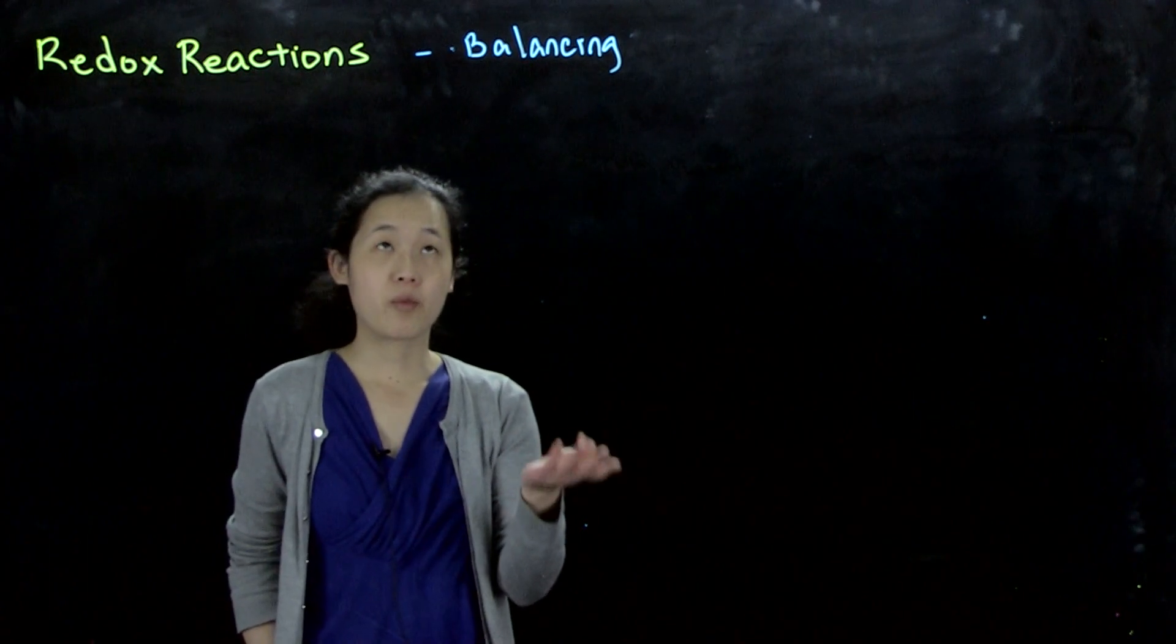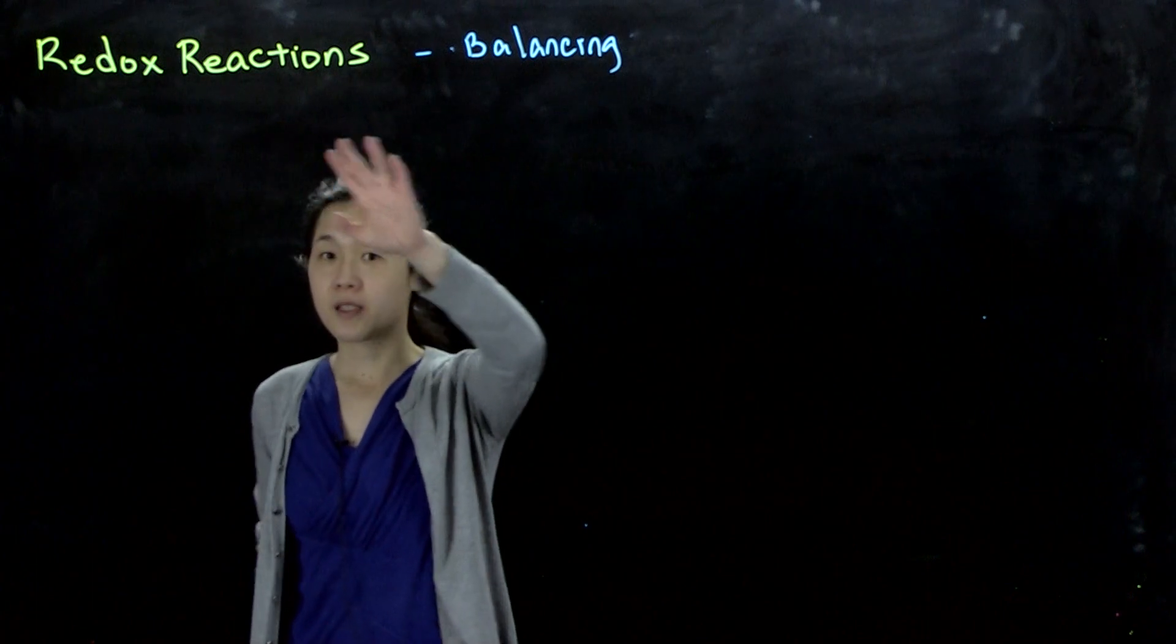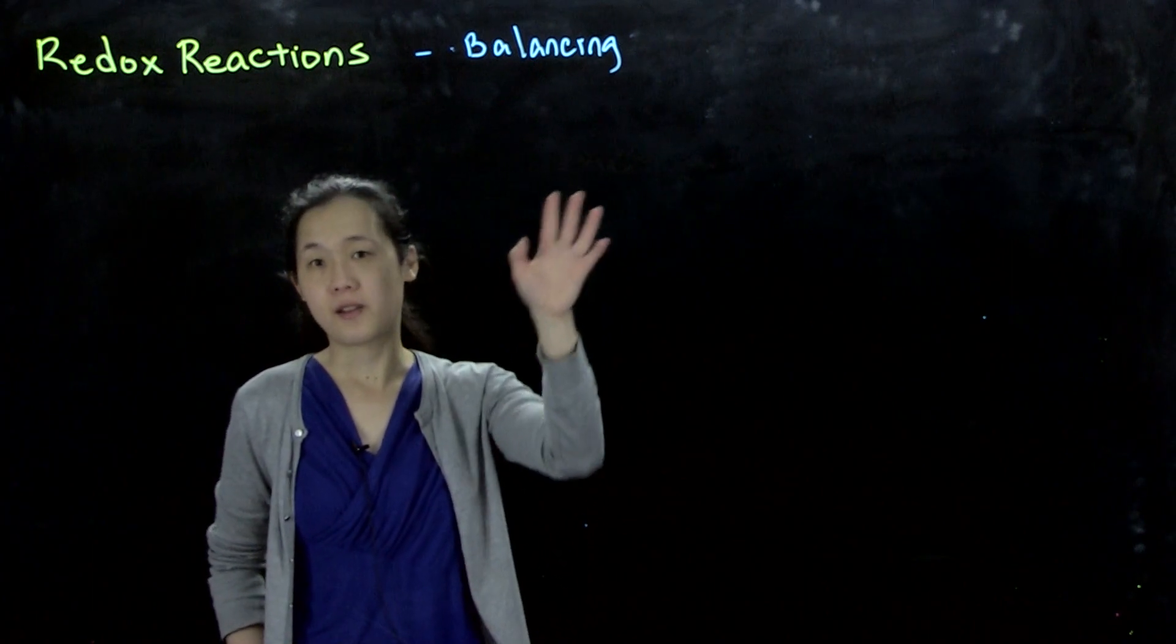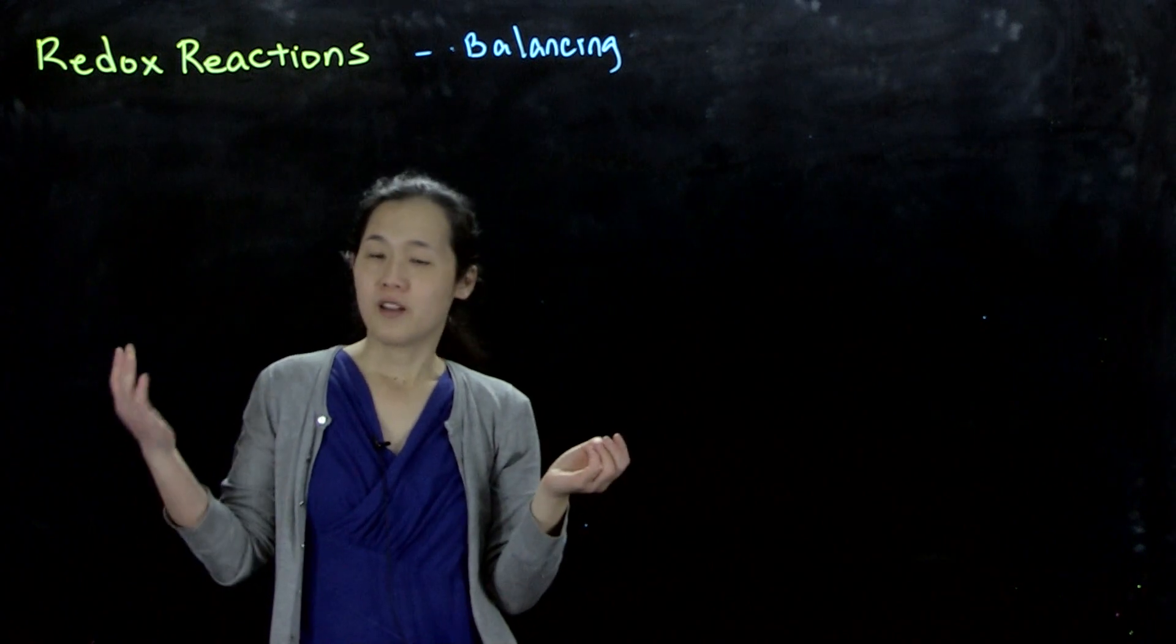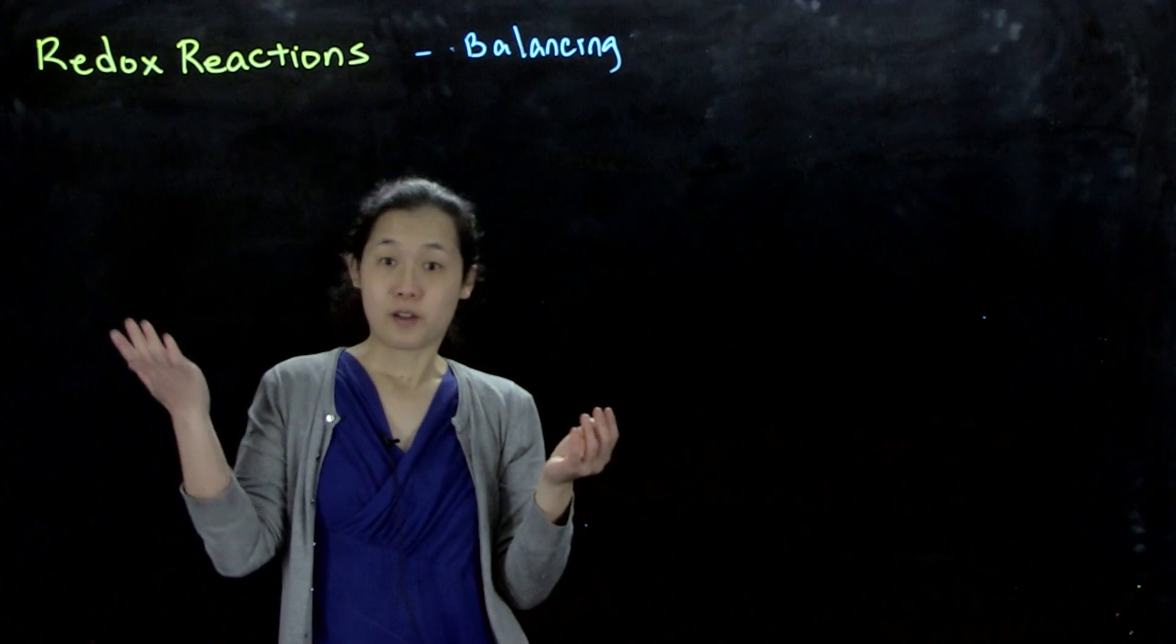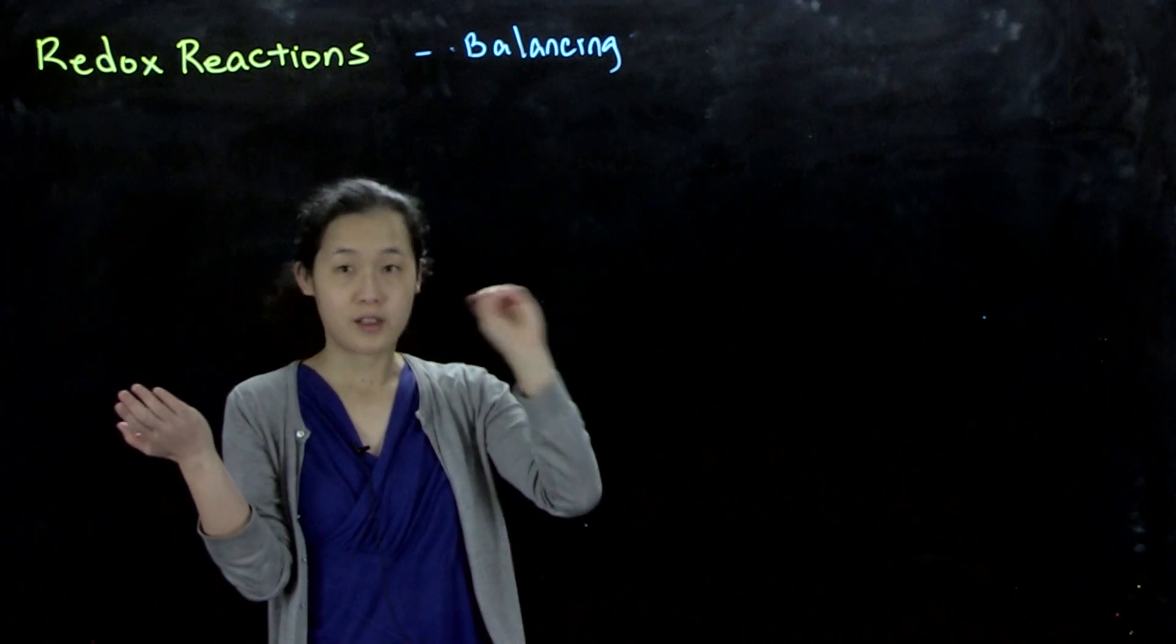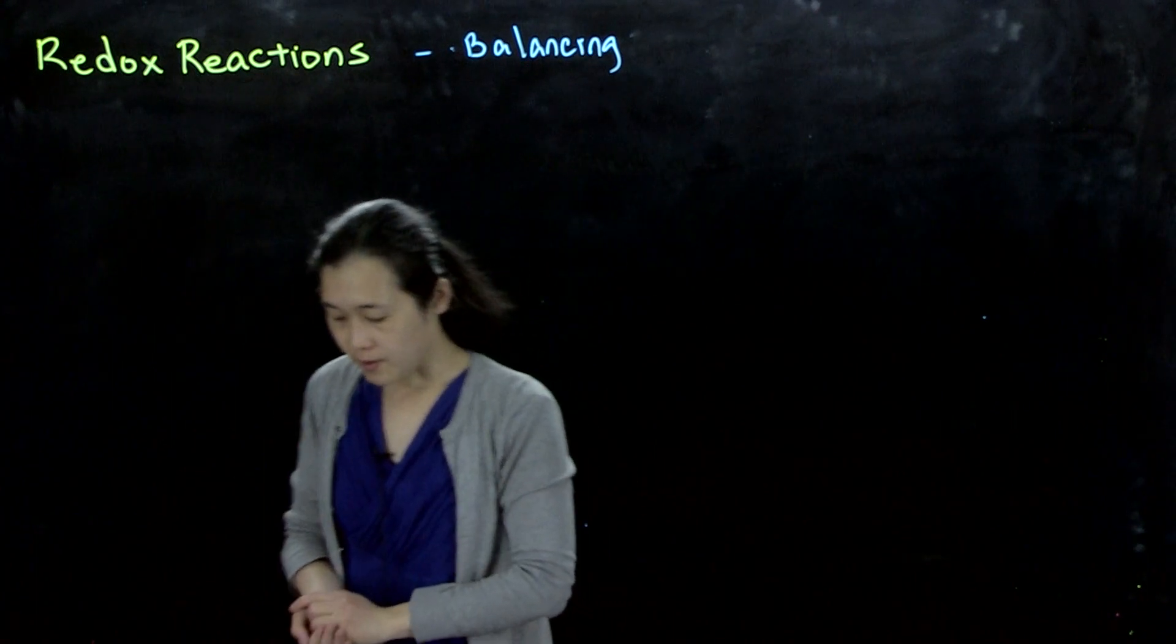As chemists, we know that stoichiometry is very important. So for a redox reaction, in order to know the stoichiometry, we need to be able to balance our electrons that are getting transferred. The number of electrons your oxidant is gaining has to be equivalent to the number of electrons the reductant is giving away. Let's do an example.